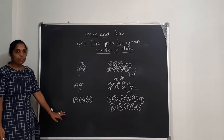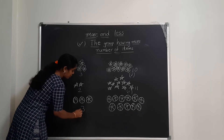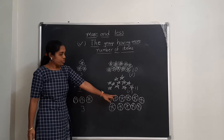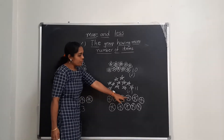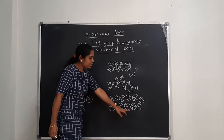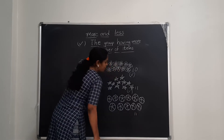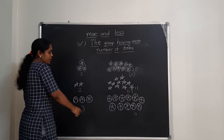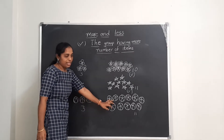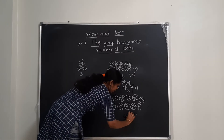Next, let us count the boys. One, two, three — here in this group, there are only three boys. One, two, three, four, five, six, seven, eight, nine, ten, eleven. Here in this group, there are eleven boys. Which is more — this or this? Yes, this is more.